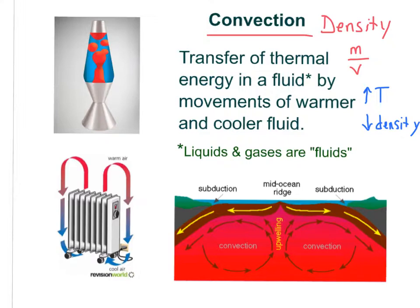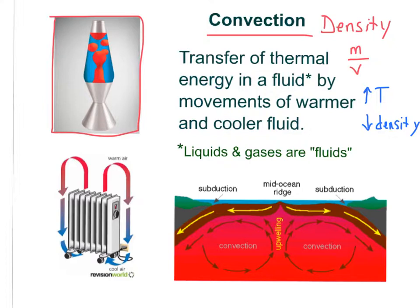Let's look at a lava lamp example. The lamp at the bottom heats the red substance. When it's heated, its temperature increases, its density decreases, and it rises to the top of the fluid. There it transfers thermal energy to its surroundings, cools off, its density increases, and it sinks back to the bottom — where the lamp heats it again and the cycle repeats.